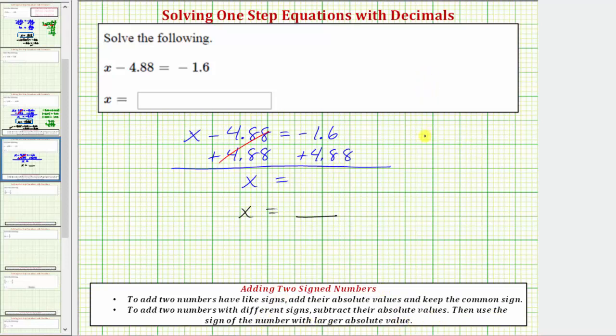Let's show some work here on the side. We have negative 1.6 plus 4.88, so we'll first find the absolute value of the two numbers. The absolute value of 4.88 is 4.88.